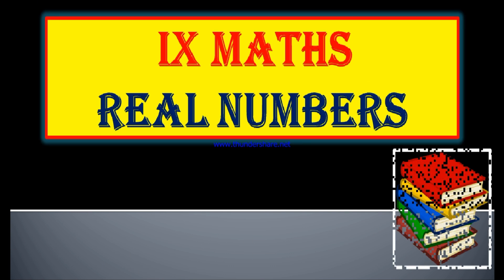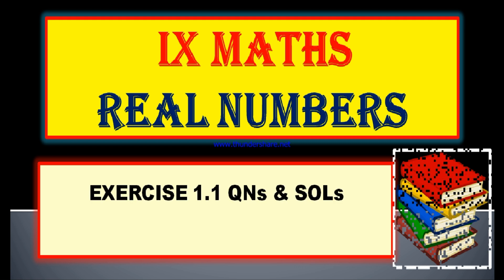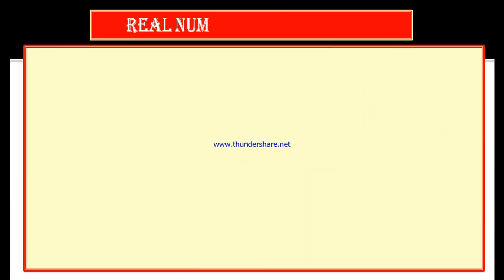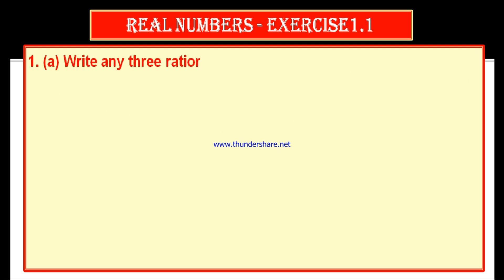Hi, this is Giri teaching ninth mathematics, the chapter Real Numbers. Here are the questions and solutions from Exercise 1.1. First question, part A: write any three rational numbers. First of all, let us recollect what is a rational number. Can you say what is a rational number?